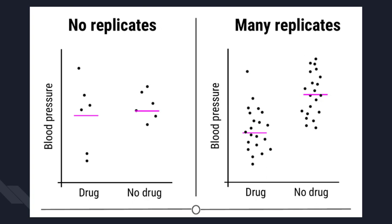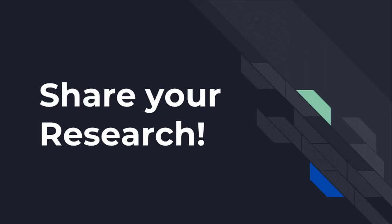There is one final concept of experimental design to cover: replication. Replication is repeating an experiment with different experimental subjects. A single experiment's results may have occurred by chance — a confounder was unevenly distributed, there was a systematic error in data collection, or there were outliers. However, if you can repeat the experiment, collect a whole new set of data, and still come to the same conclusion, your study is much stronger. Replication also allows you to measure the variability of your data more accurately, helping you assess whether differences you see are significant.